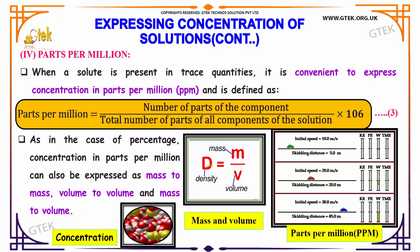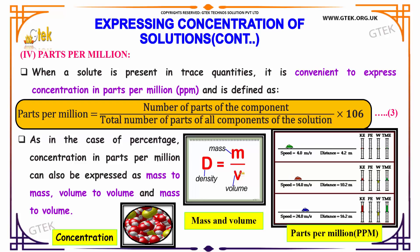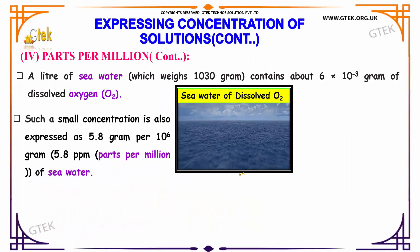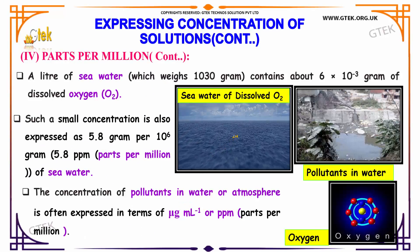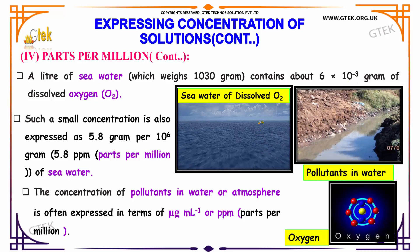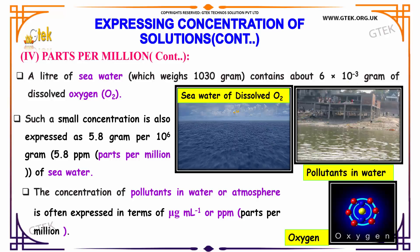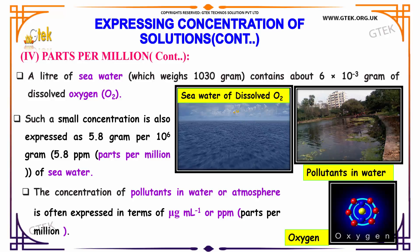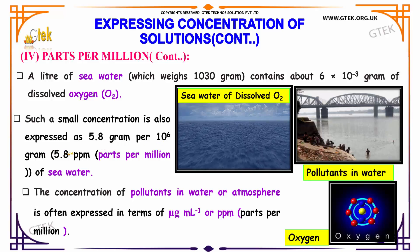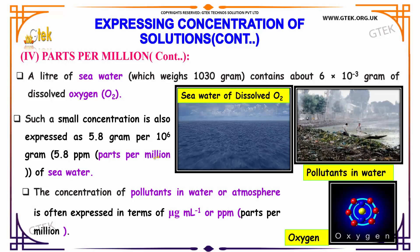Here is the relation between density, mass, and volume. A liter of sea water, which weighs 1030 grams, consists of about 6 × 10⁻³ grams of dissolved oxygen. Such a small concentration is also expressed as 5.8 grams per 10^6 grams, that is 5.8 ppm parts per million of sea water.